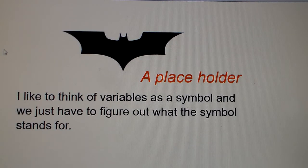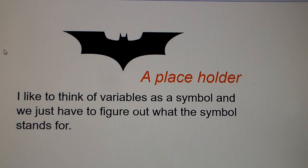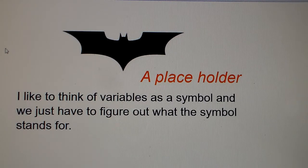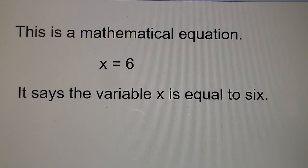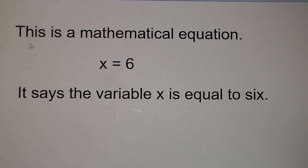Variables are like a placeholder — just something to take the place of something that we don't know just yet. It's something put in place for what we're going to solve for. I like to think of variables as a symbol and we just have to figure out what the symbol stands for. The most common symbol we use in math is x, and that's why you see things like 'solve for x' on T-shirts. This mathematical equation x equals 6 says the variable x is equal to 6.